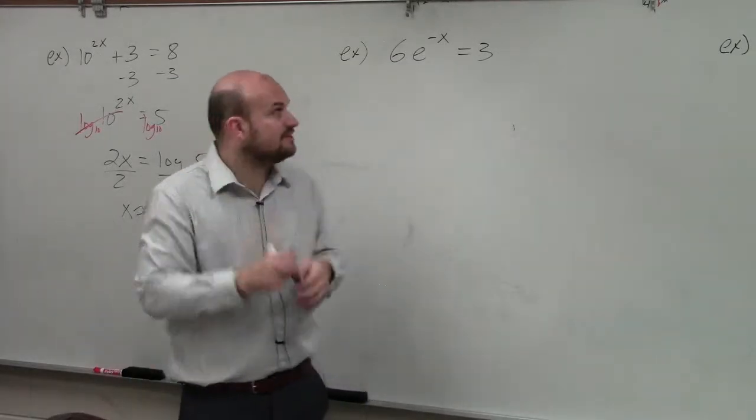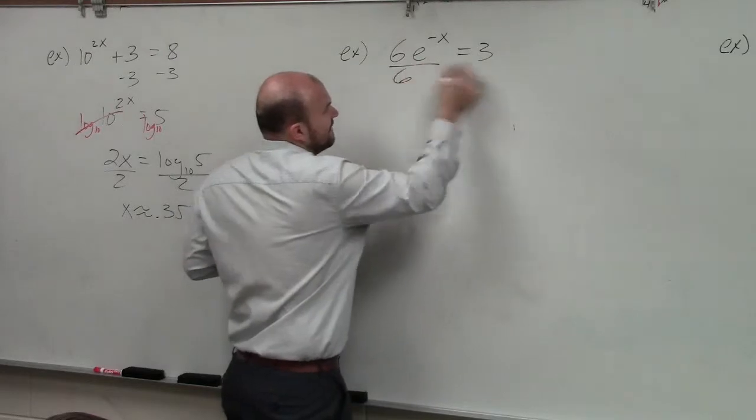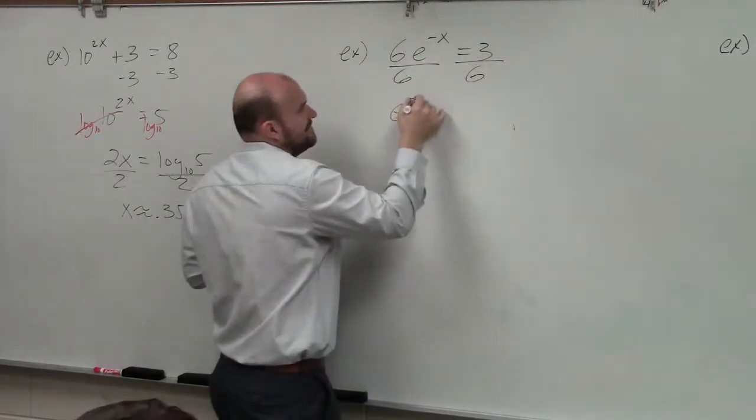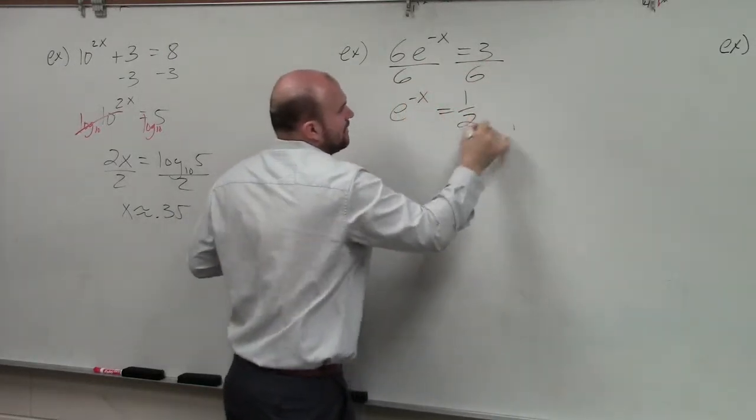Again, isolate the variable. So in this case, I divide by 6 on both sides. I have e to the negative x equals 1 half.